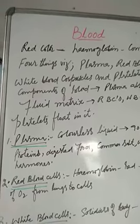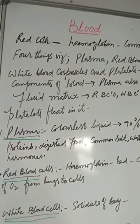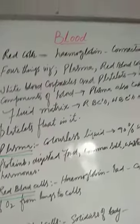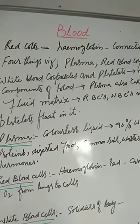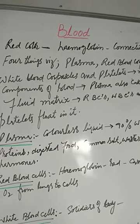Blood is a red colored liquid which circulates in our body. Blood is red because it contains hemoglobin, a pigment which gives red color to the blood. Blood is a connective tissue.